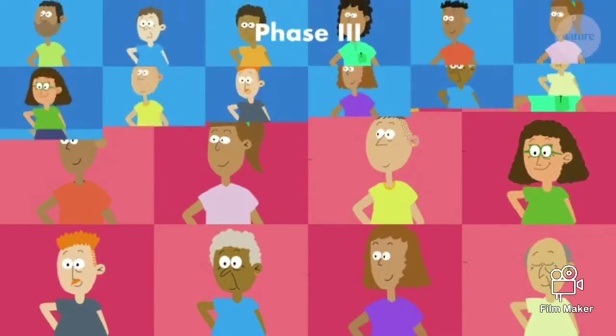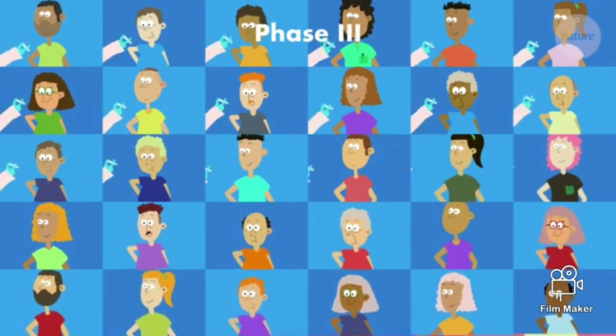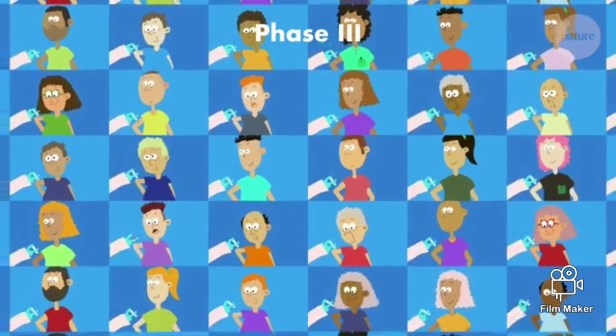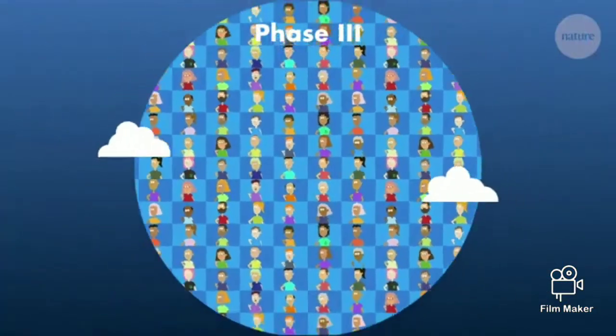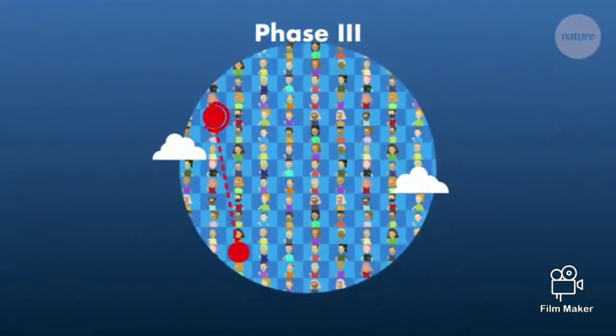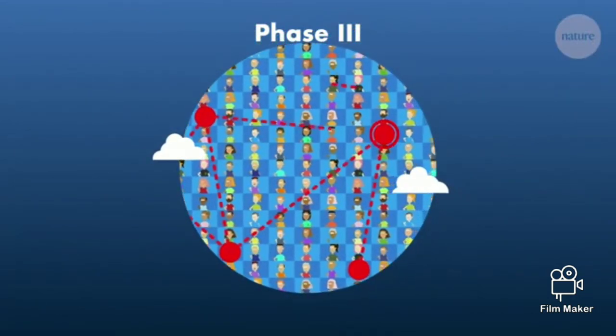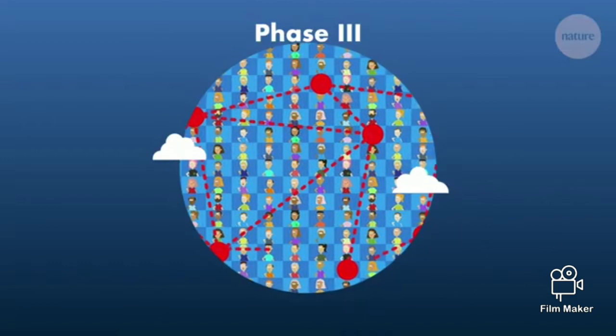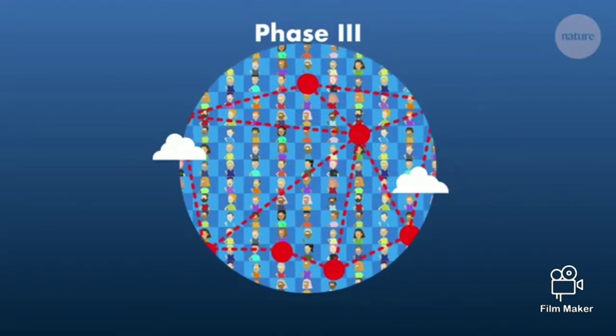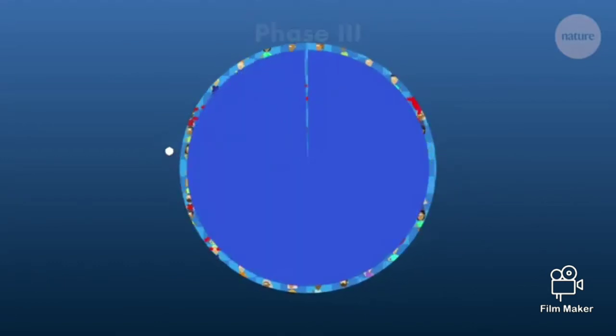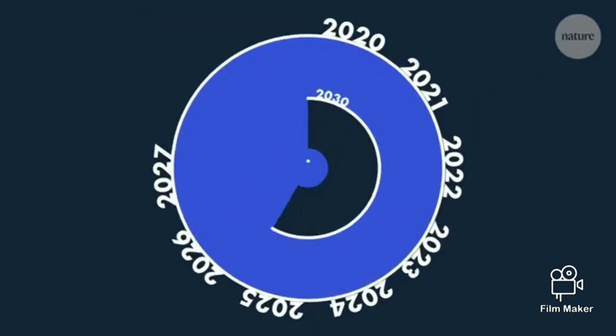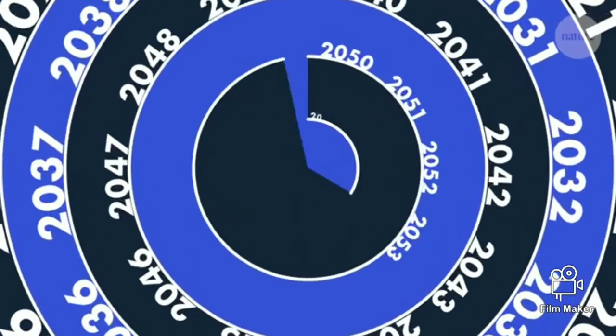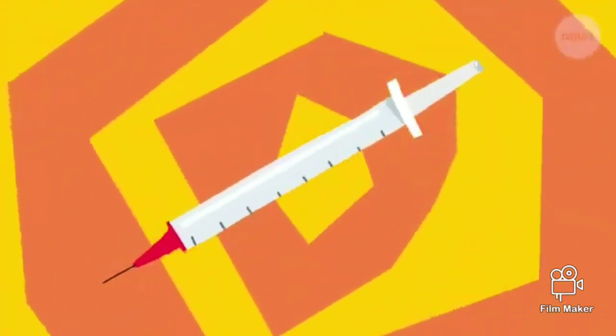Finally, you can trial the vaccine in thousands of people to see how effective it is. This step is often the slowest, and participants are sometimes recruited around the world. Researchers have to wait for participants to come into contact with the pathogen naturally. By tracking how many become infected, they can work out how effective the vaccine is at protecting the group. It can take decades to gather enough data to be sure, but if you do, the vaccine can finally be licensed.